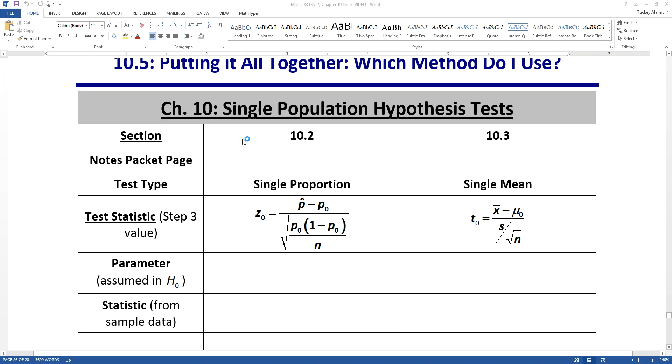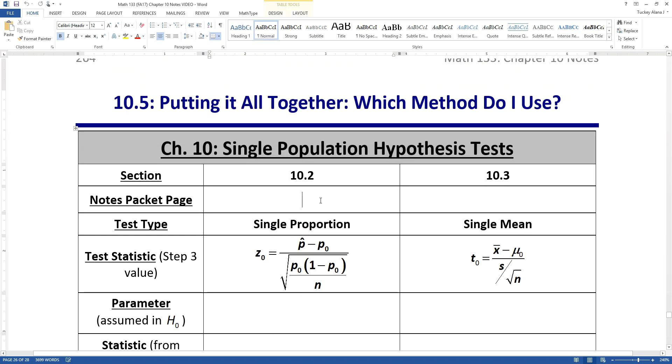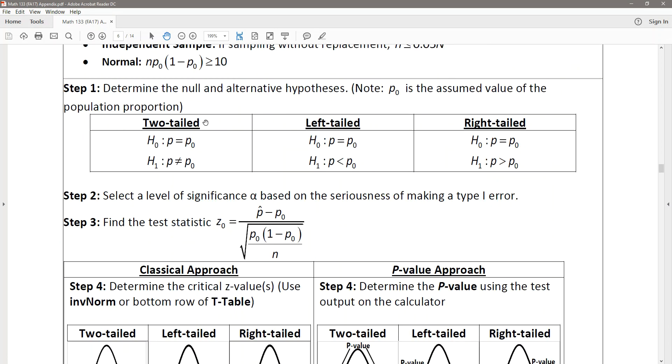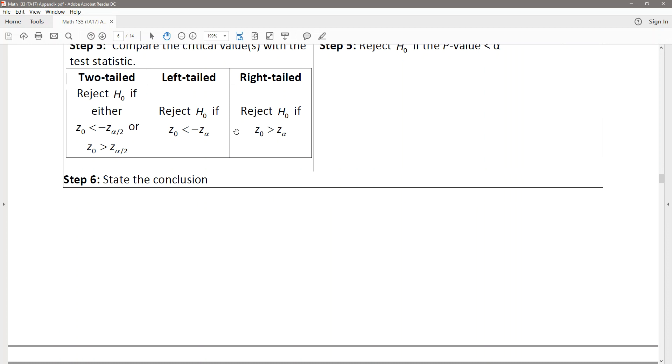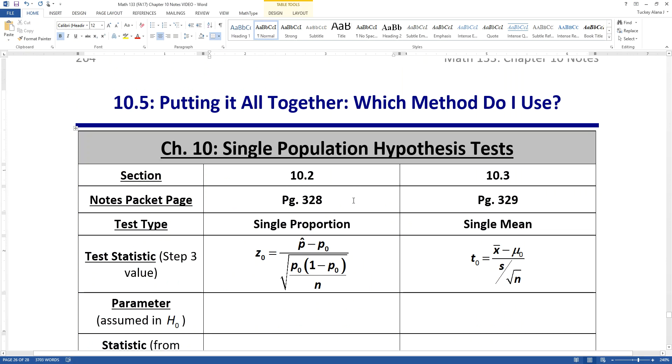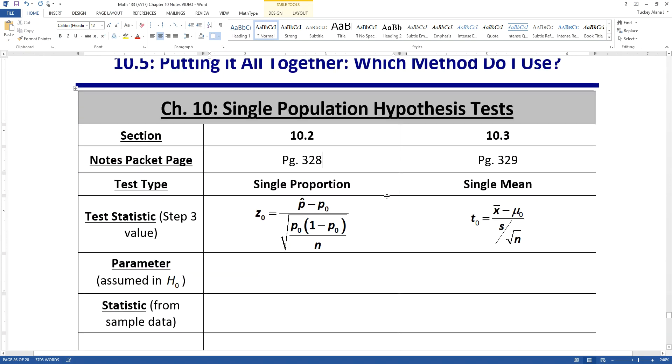So we've had two sections, 10.2 and 10.3, which were about single population hypothesis testing. On this particular semester when I'm making this video, this is on page 328 for 10.2 and page 329 for 10.3. That might change in later semesters, so put down whatever dates are appropriate for you.